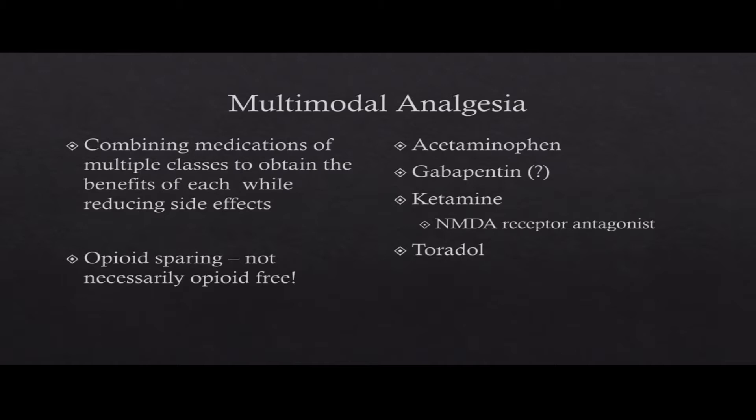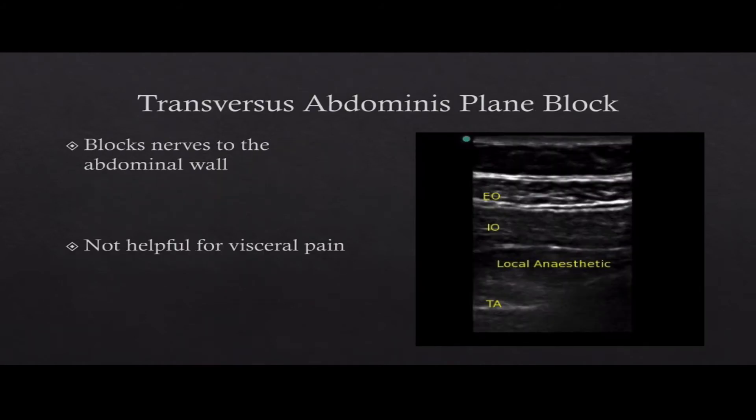Ketamine is back in fashion. It's a phencyclidine derivative that provides really nice analgesia — not at the opioid receptor, so no respiratory depression. We use sub-anesthetic doses, which have some nice benefits with minimal 'bad trip' risk. Ketorolac — we like toradol. You can give patients celecoxib pre-op, but we find we get more analgesic effect from ketorolac. Since patients have an IV anyway, we give the ketorolac.